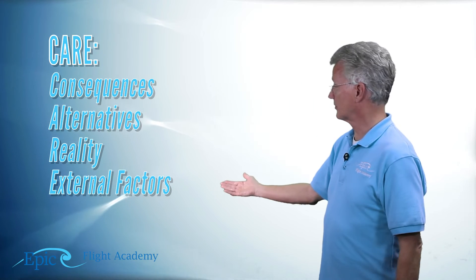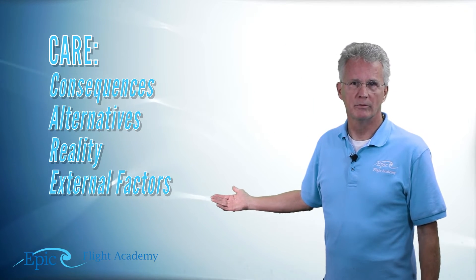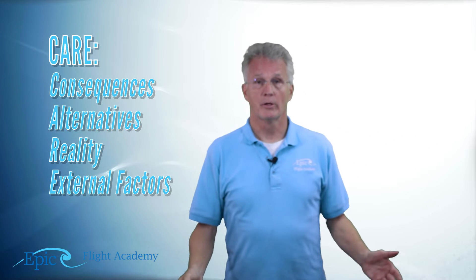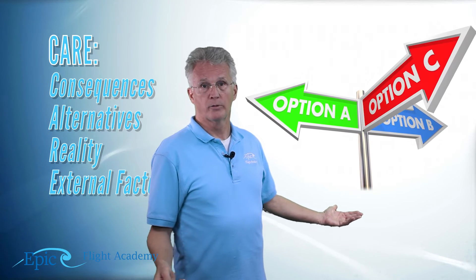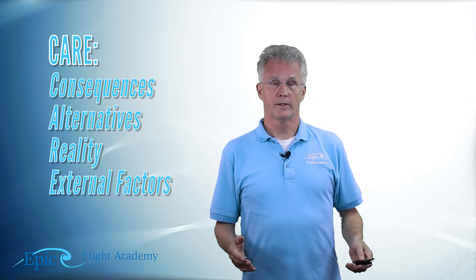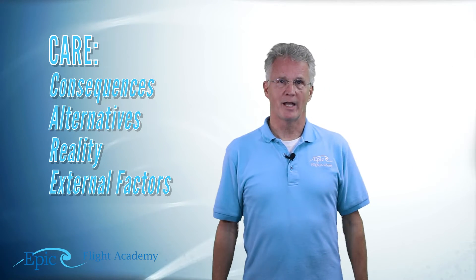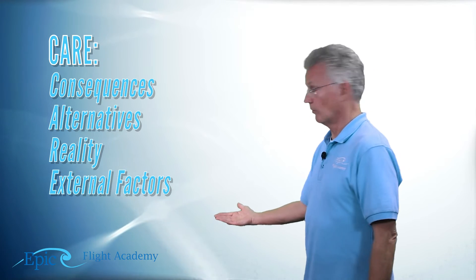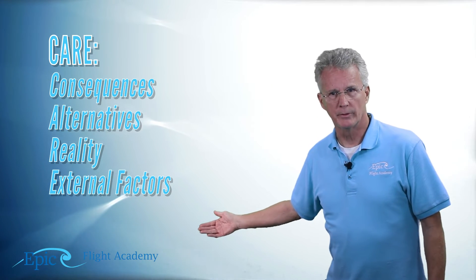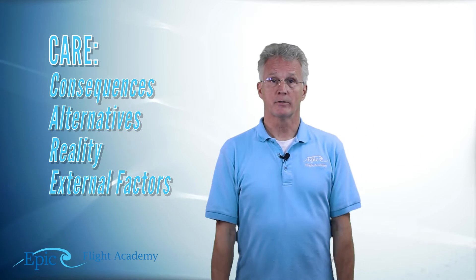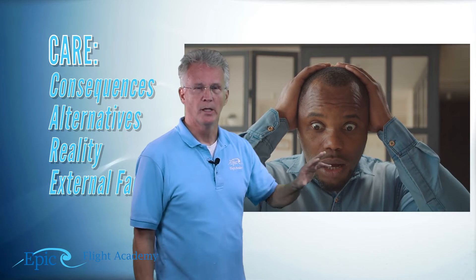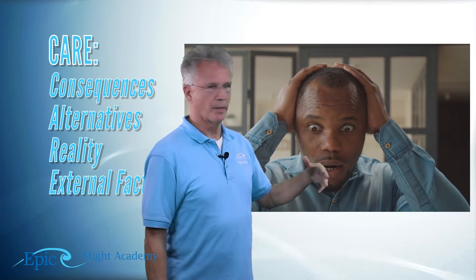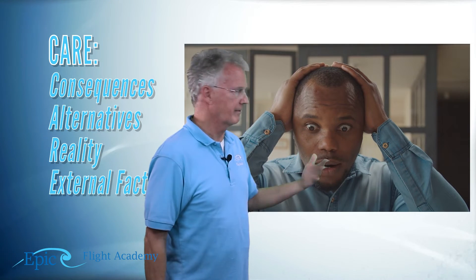CARE is another four-part checklist. C is consequences — what are the consequences of these actions? A is alternatives — what choices could I pursue? R is reality — let's be realistic about what I can actually do, which balances against the macho hazardous attitude. And E is external factors — what external factors are stressing me right now, pushing me to accept risk I really shouldn't or adopt a hazardous attitude?